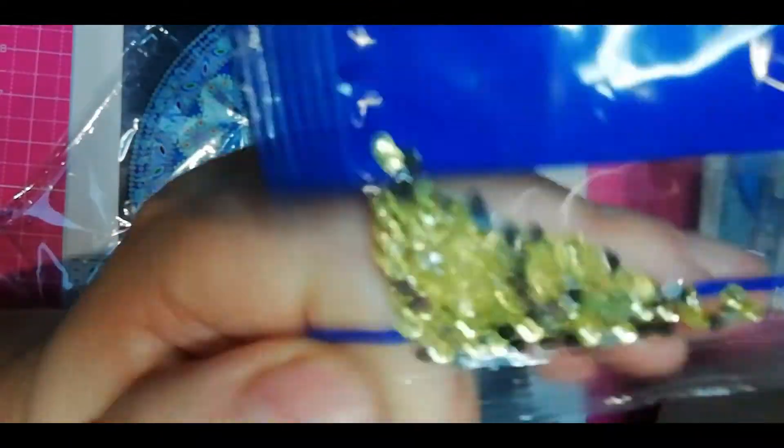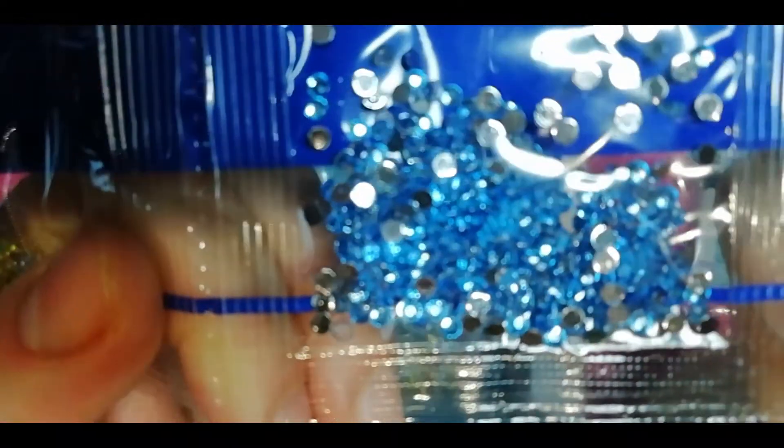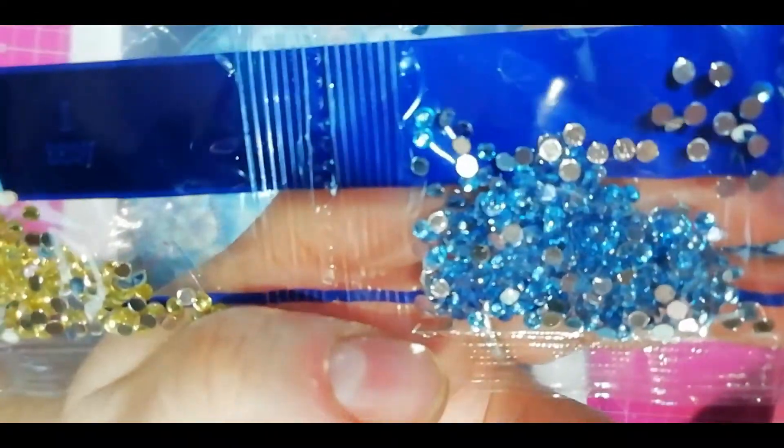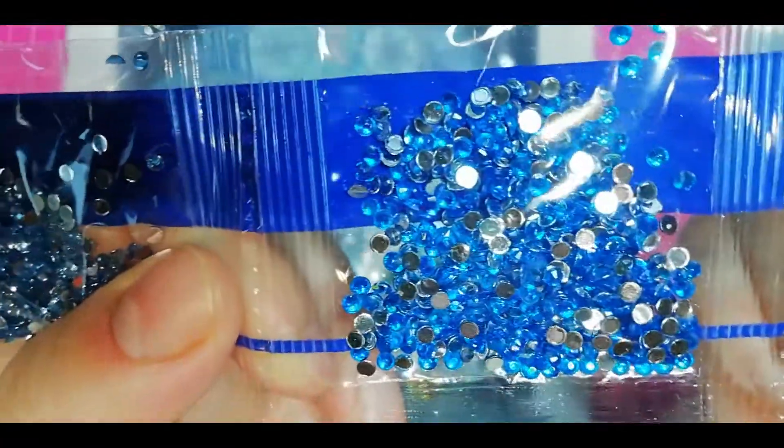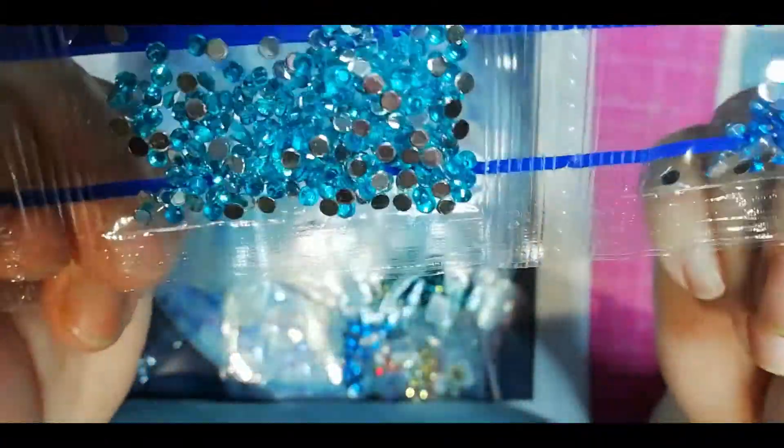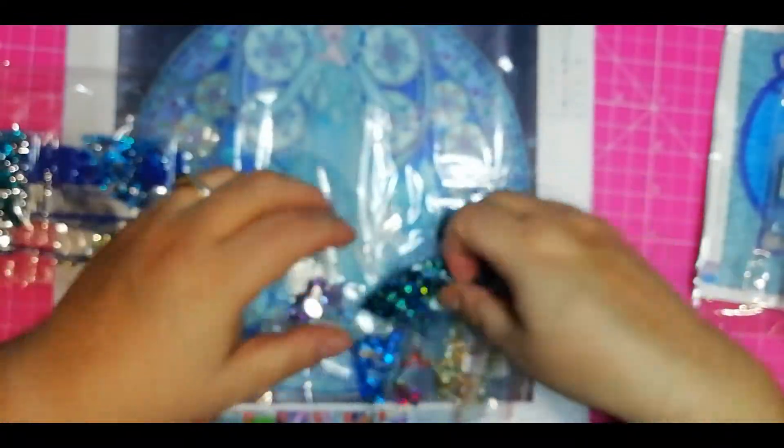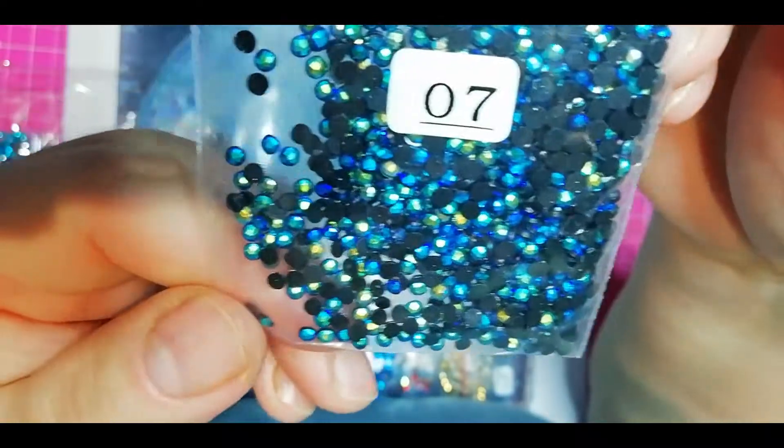We have loads of green, light blue, look at this beautiful blue. We have more of that. Turquoise. Oh, this is a very nice blue. And for special shapes, we have black ABs.